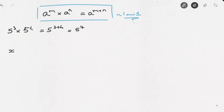Or we could be given an expression to simplify — for instance, x to the power of 7 times x to the power of 4. Using the first law of exponents, this equals x to the power of 7 plus 4, which is equal to x to the power of 11. So that's the first law of exponents.